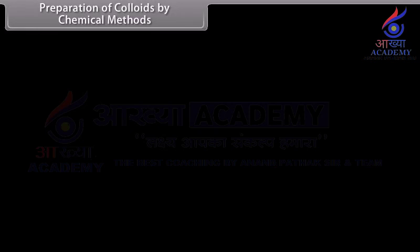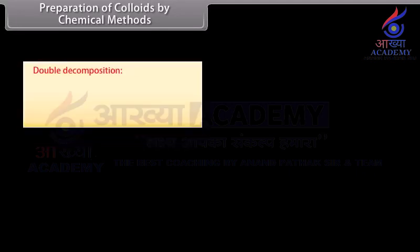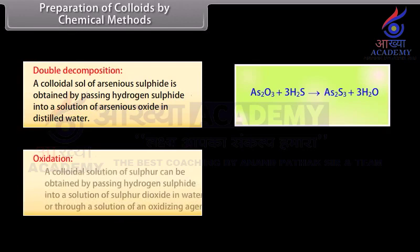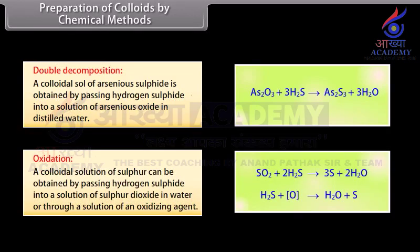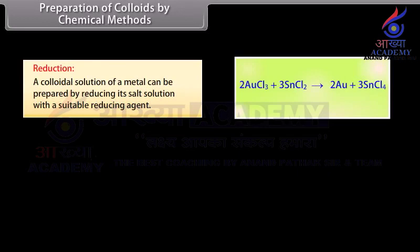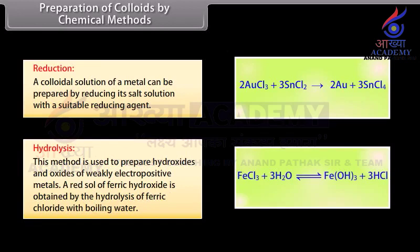Preparation of colloids by chemical methods. Colloidal solutions can be prepared by chemical reactions involving double decomposition, oxidation, reduction, and hydrolysis. Double decomposition: a colloidal sol of arsenious sulfide is obtained by passing hydrogen sulfide into a solution of arsenious oxide in distilled water. Oxidation: a colloidal solution of sulfur can be obtained by passing hydrogen sulfide into a solution of sulfur dioxide in water or through a solution of an oxidizing agent. Reduction: a colloidal solution of a metal can be prepared by reducing its salt solution with a suitable reducing agent. Hydrolysis: a red sol of ferric hydroxide is obtained by the hydrolysis of ferric chloride with boiling water.